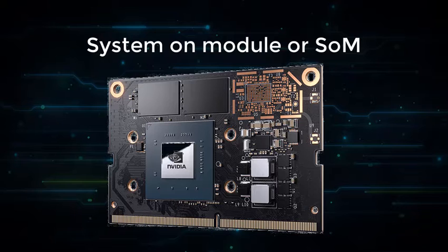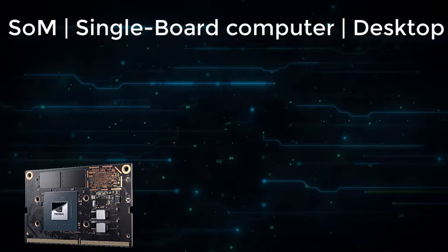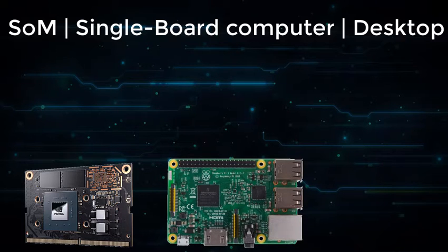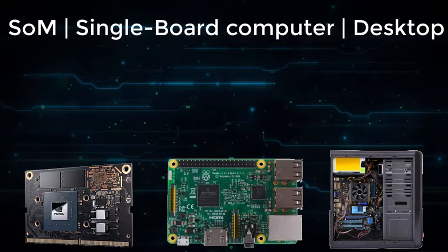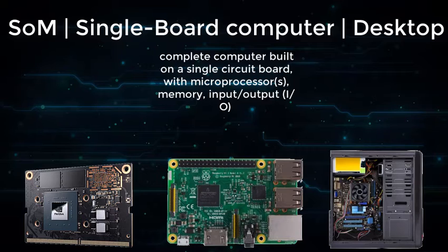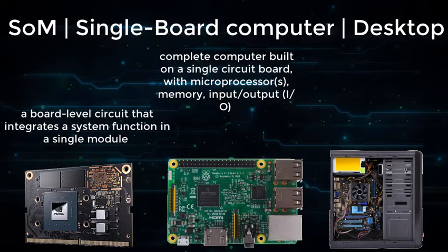To understand how it differs from other things, let's compare a system on module like Jetson Nano to a single-board computer like Raspberry Pi, and both of those to a regular desktop. For the single-board computer, we have all the necessary components — microprocessor, memory, GPU — on one board, along with interfaces like USB, Ethernet, and HDMI, also on the same board. So it's plug and play: you just insert the keyboard, mouse, and HDMI cable and you're good to go. A system on module does not have those interfaces — no USB or Ethernet — but it does have the core components like microprocessor, memory, and GPU on one PCB.